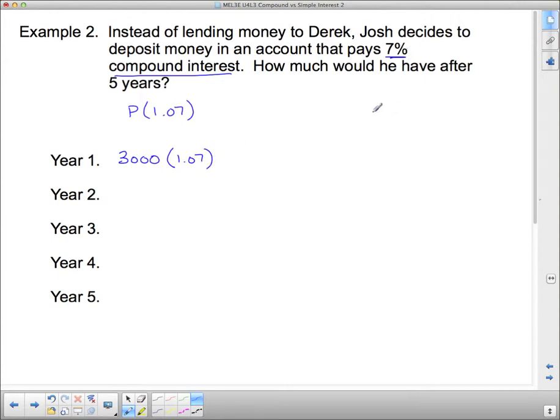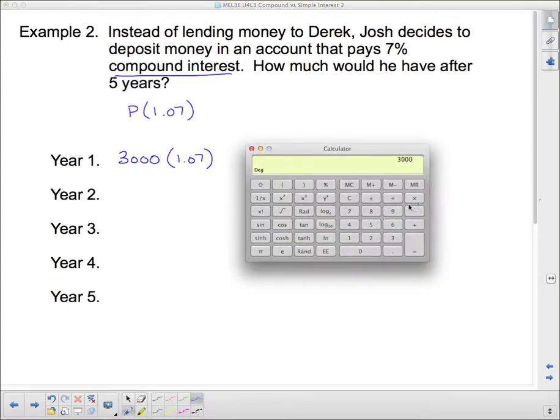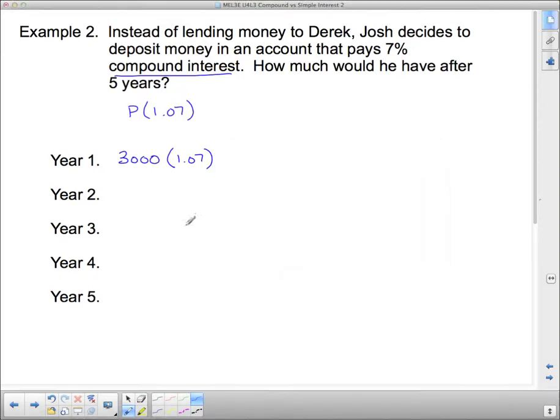Where before, when we calculated sales tax, we multiplied by 1.13. Because that was 13% GST and PST, or as we called it, HST, the Harmonized Sales Tax. And the 1 here stood for 100% of the cost. So here, it's kind of like we did that with the sales tax. And so we're just going to calculate this out. And we'll say, okay, it's 3,000 times 1.07. And that's 3,210.